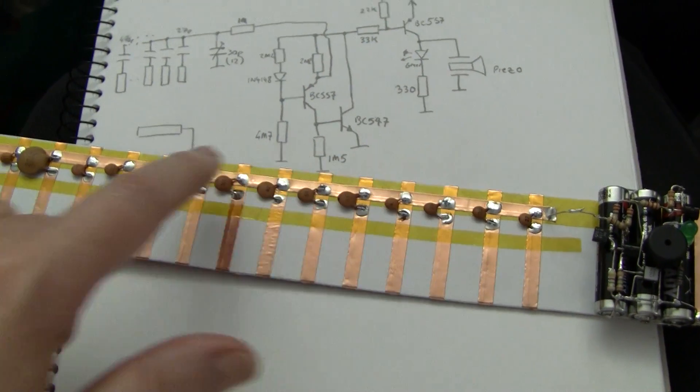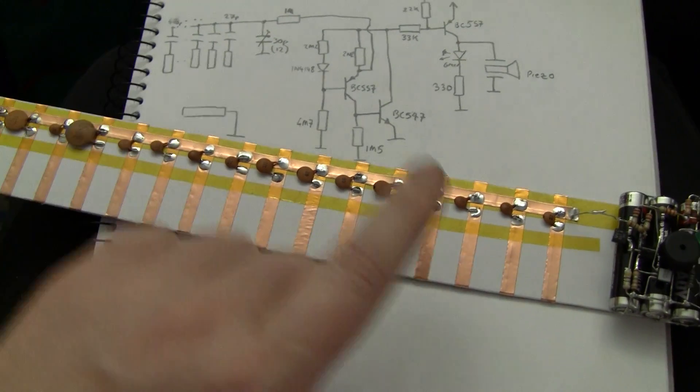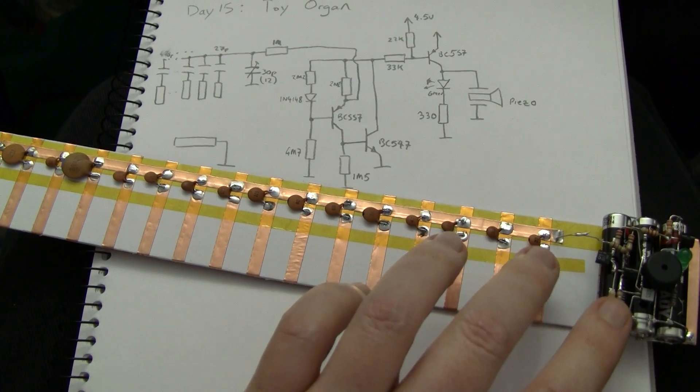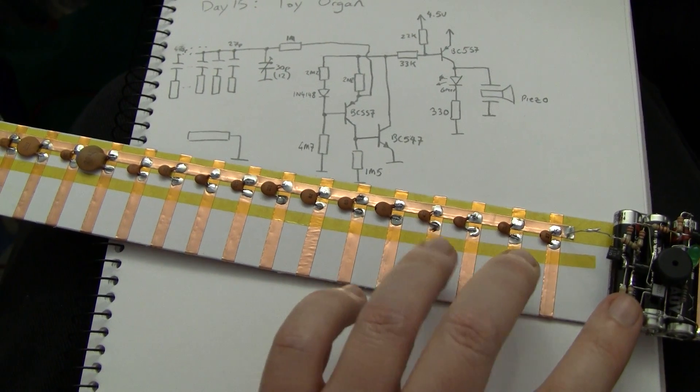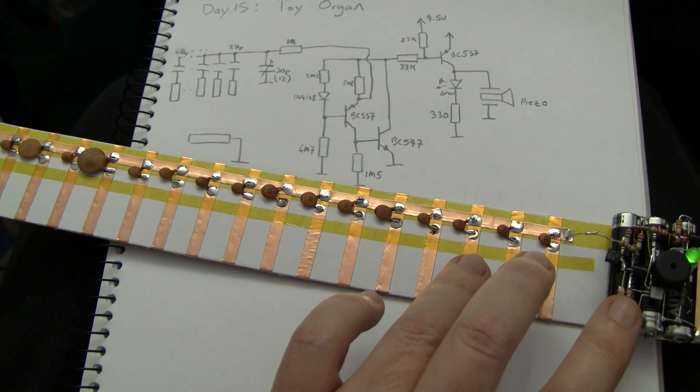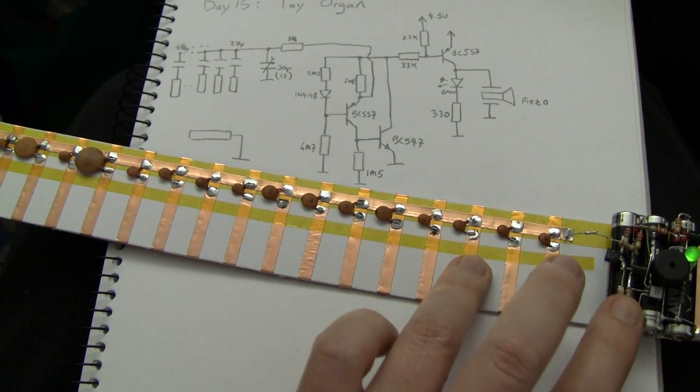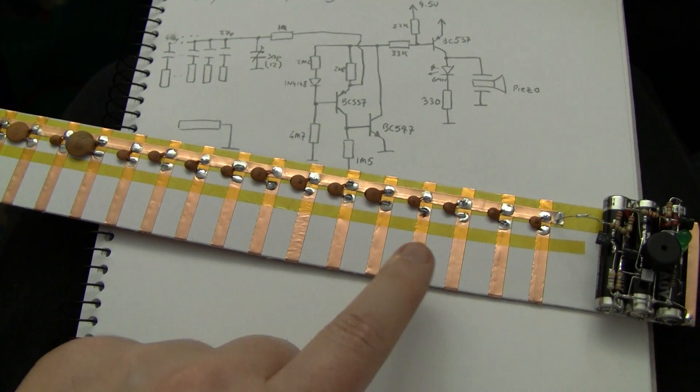You could spend more time, in fact you could use a trimmer for every cap if you wanted to, and obviously the capacitance of your body changes a little bit with pressure. So it's a little bit chirpy when you first make contact.